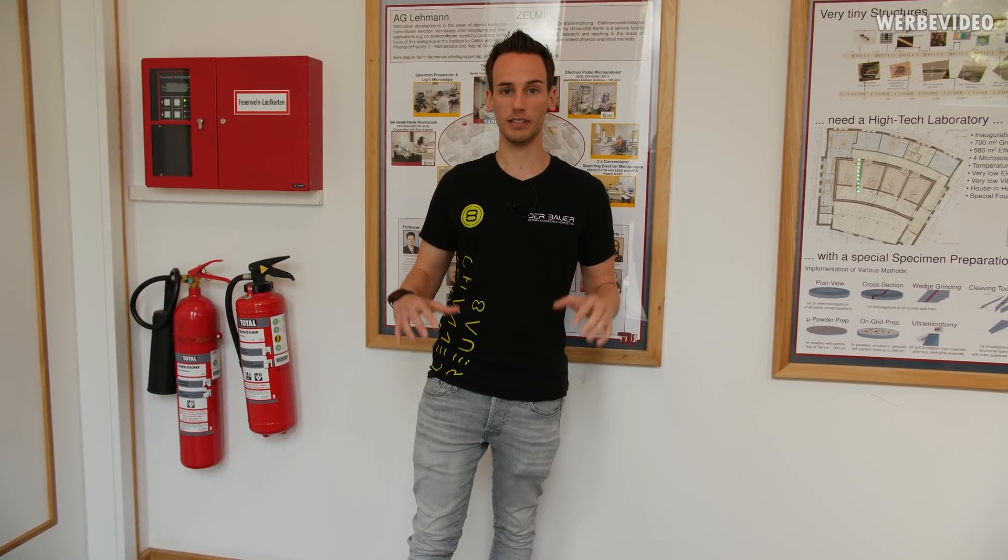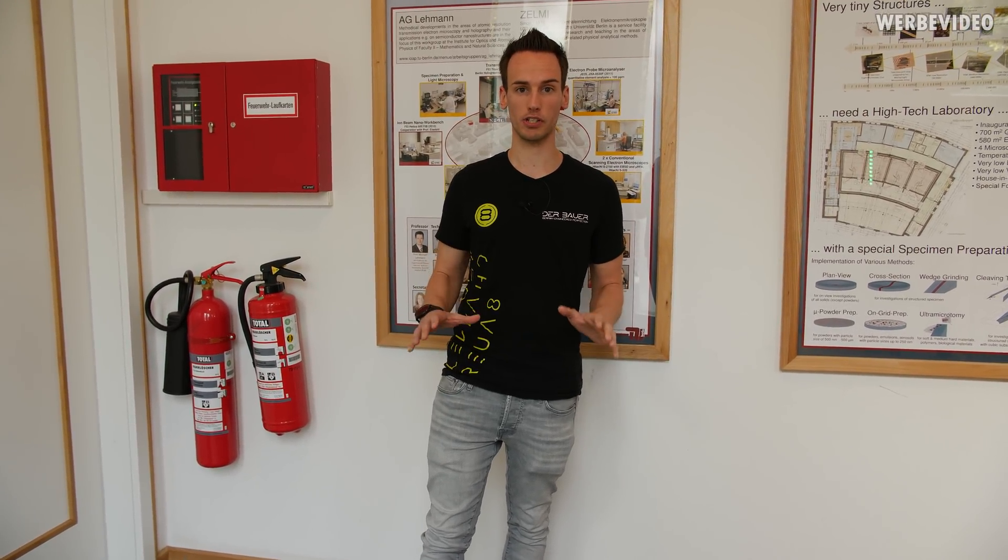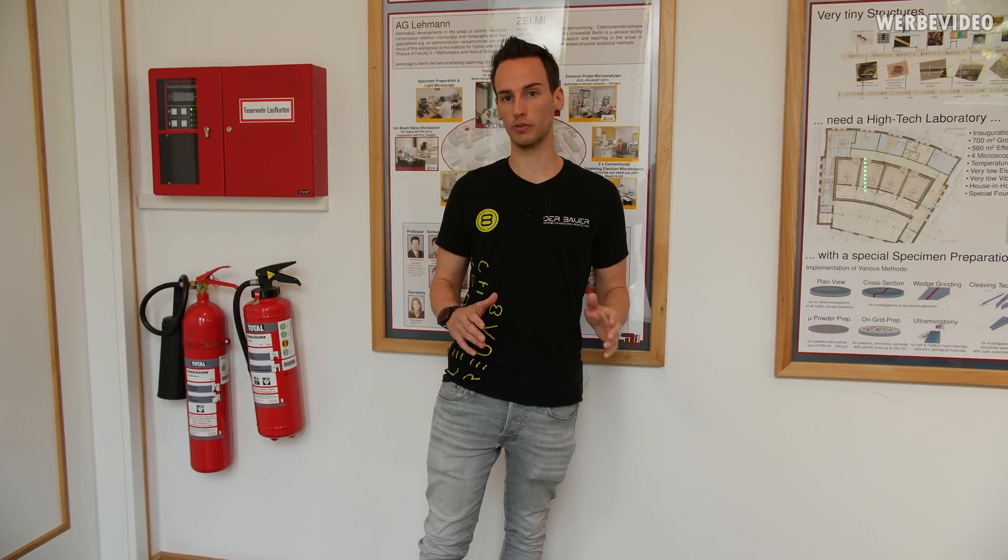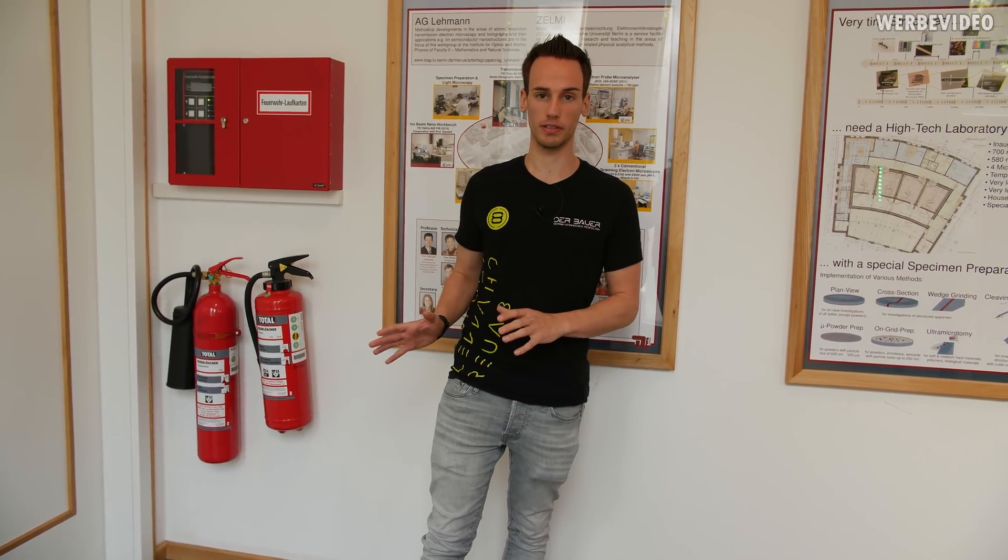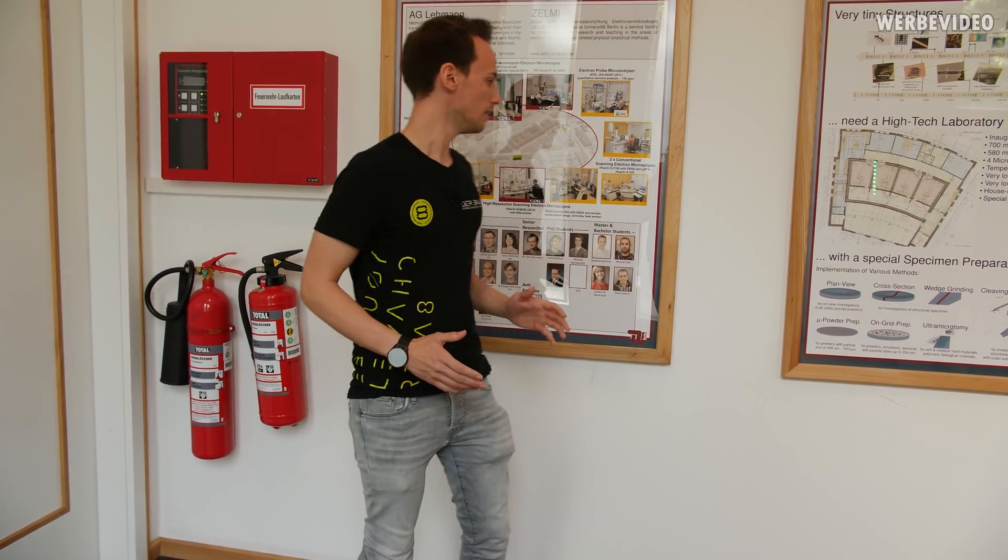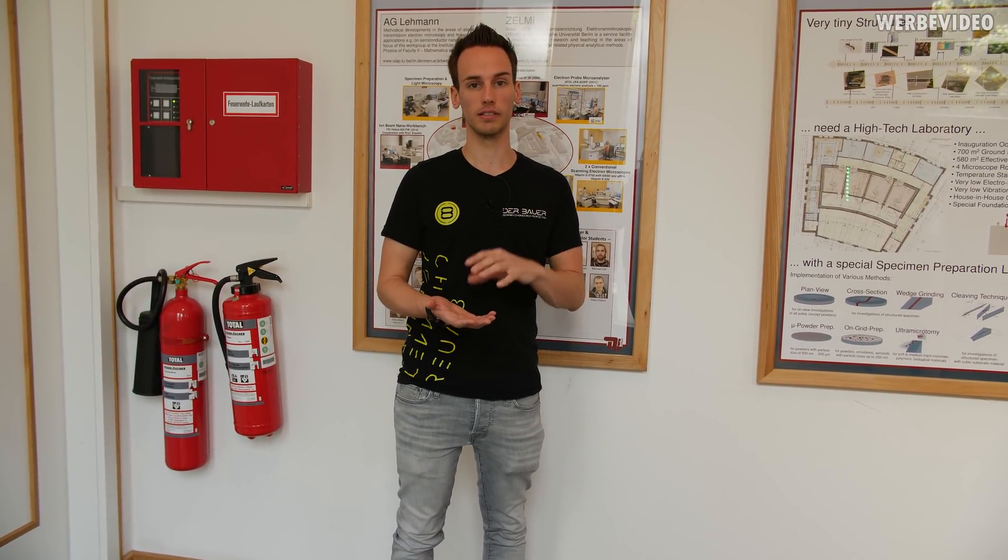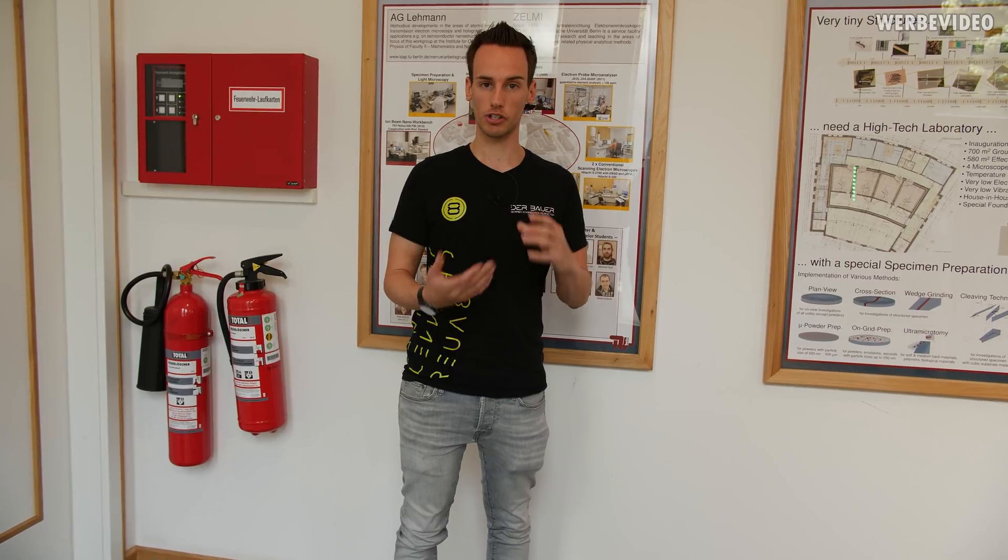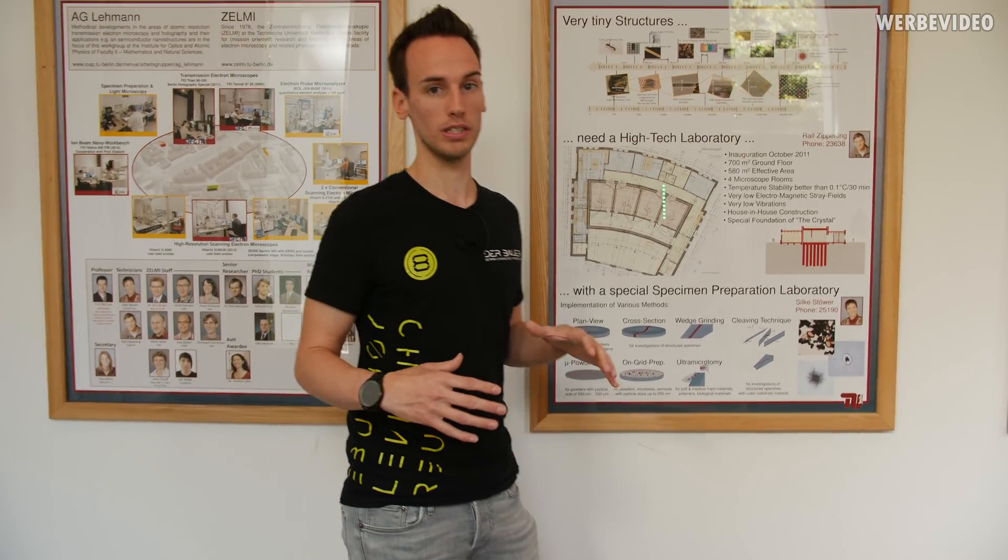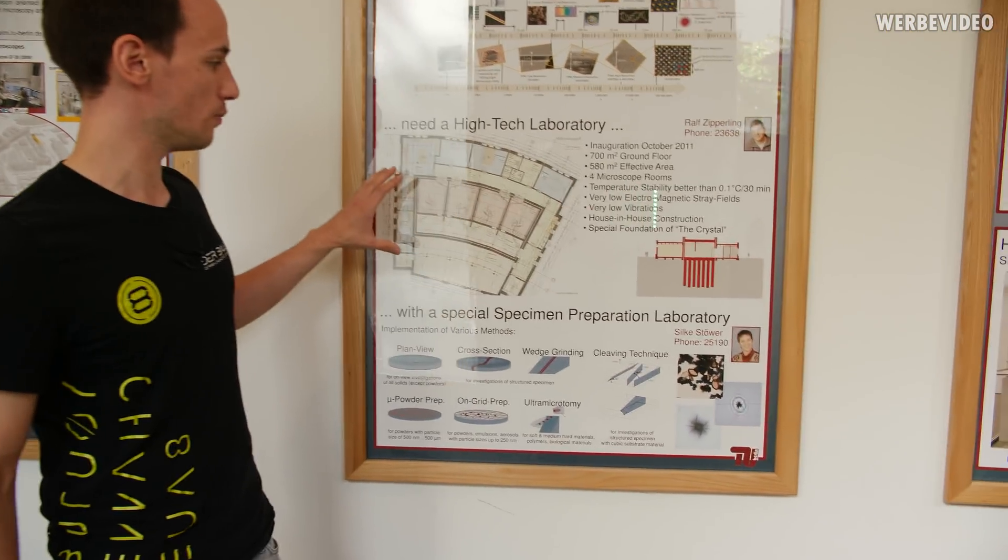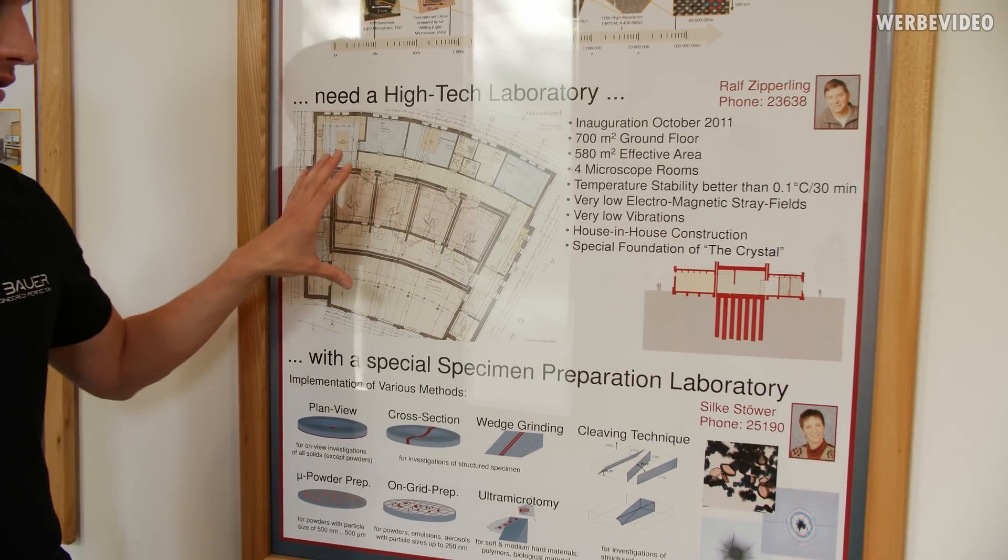We are now in the center of electron microscopy and this is a very special building. Apart from doing the TEM and SEM analysis, there are more different microscopes in this building performing several analyses, for example looking at steel components or biological components. To be able to have those microscopes in this building and to take those shots, there was a special requirement for this building.